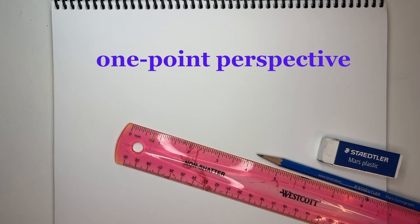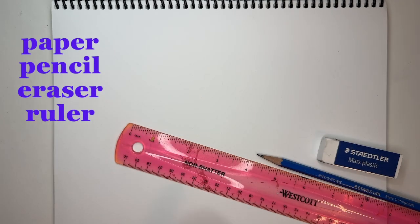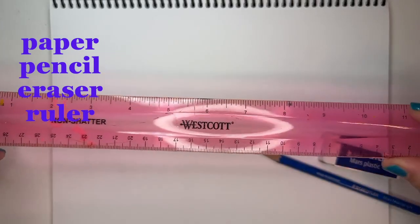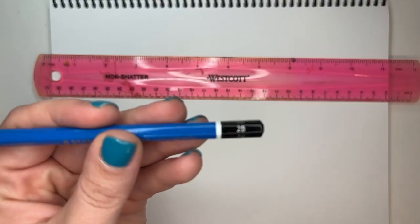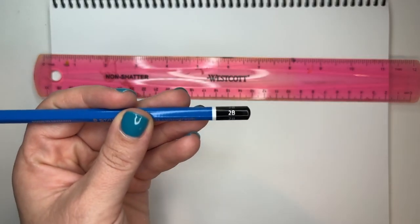Let's draw some basic boxes in one-point perspective. You'll need a sheet of paper, a ruler, a pencil, and an eraser. For this, I'm using a 2B pencil.